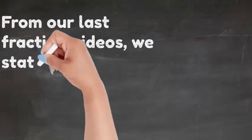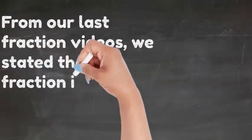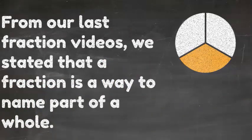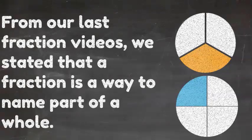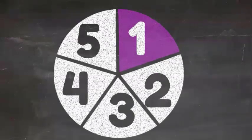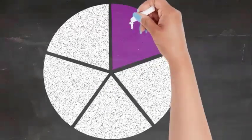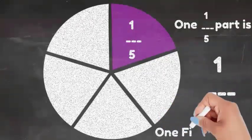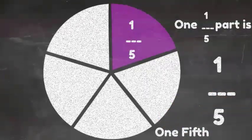From our last fraction video, we stated that a fraction is a way to name part of a whole. If you take these two portions, for example, these are fractions. One's broken into three equal parts, one's broken into four equal parts. Now when it comes to fractions, you must always first count the total amount of equal parts. This one has five equal parts. Now that one part that's shaded is called one one-fifth part, which is one-fifth written with one at the top as the numerator and five at the bottom as the denominator, one-fifth.